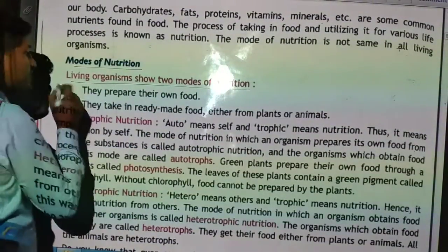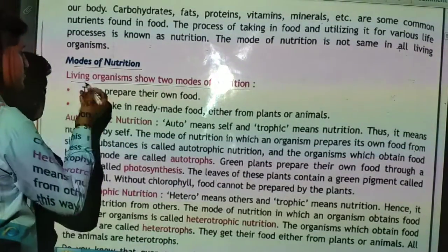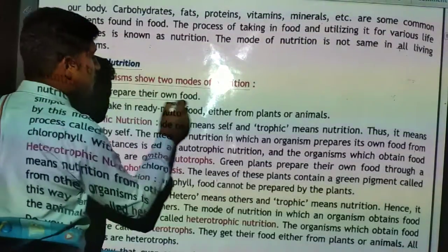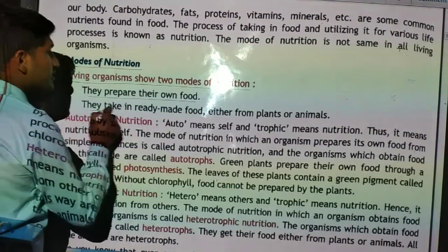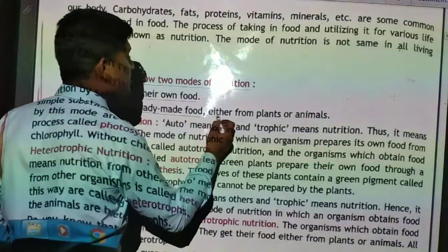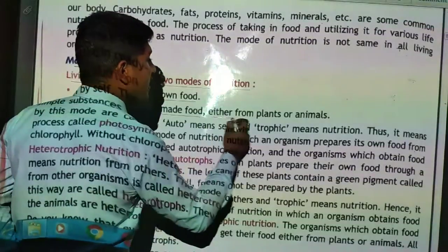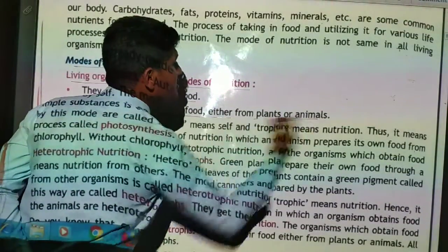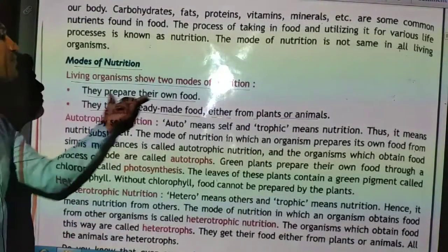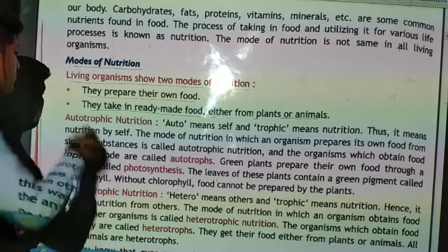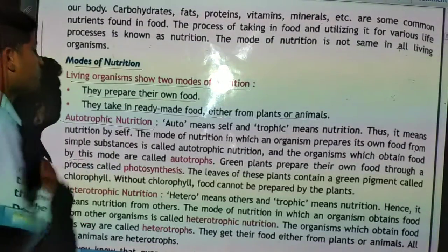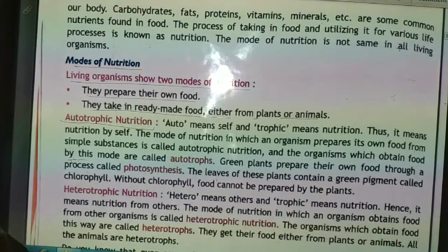The first mode is where organisms prepare their own food. The second mode is where they take in ready-made food either from plants or animals. The first one — where they prepare their own food — we call it autotrophic nutrition.